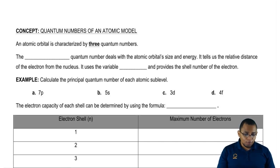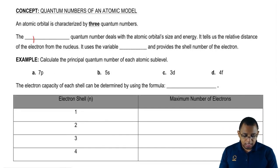The first quantum number is referred to as the principal quantum number, and it deals with the atomic orbital's size and energy.